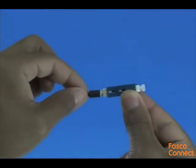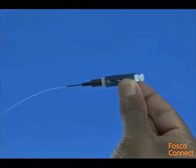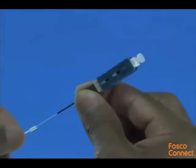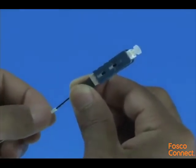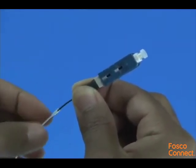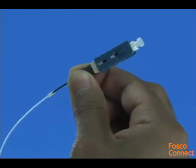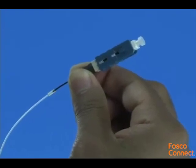Slide the 900 micron boot onto the connector. Slide the clear protective tube toward the connector and attach it to the 250 micron protective tube. Termination is now complete.